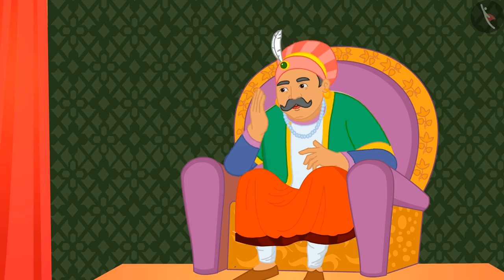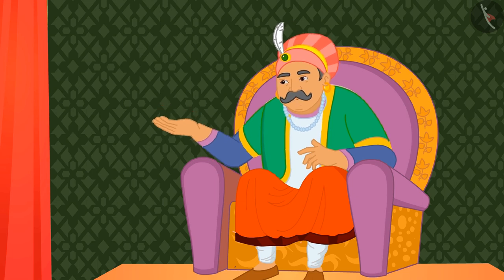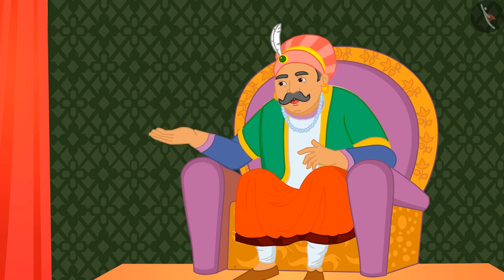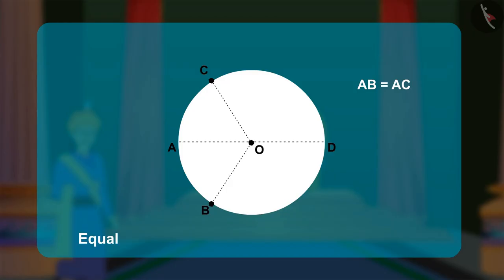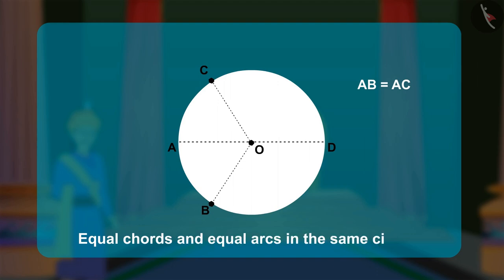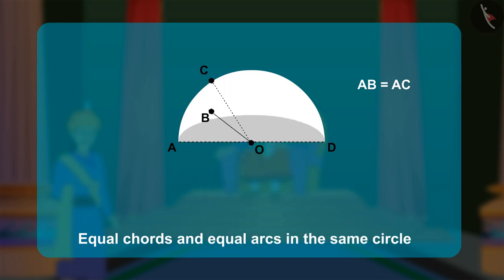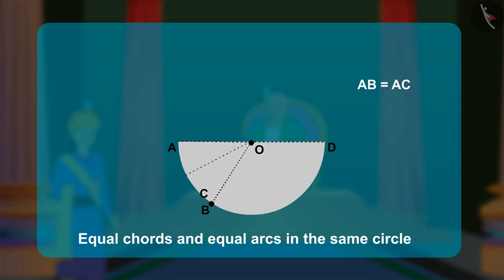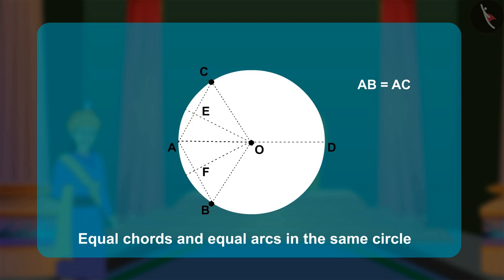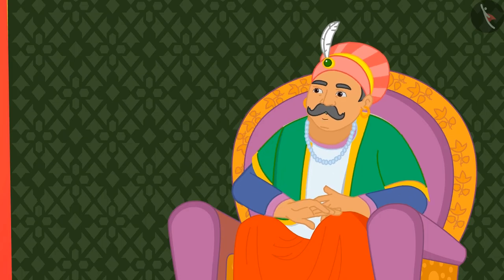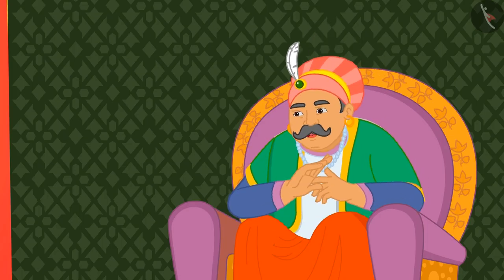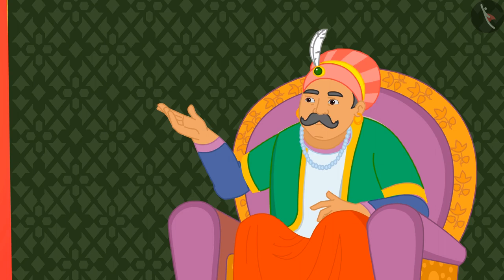Akbar asked, 'How does chord AC compare with chord AB?' Birbal started folding the lines through O perpendicular to AC and AB. He then compared AE with EC and AF with FB. Akbar then asked, 'And what about a diameter perpendicular to a chord?'